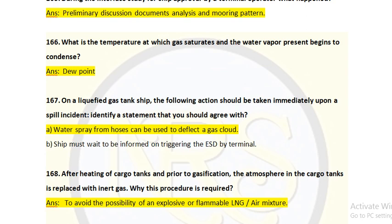If there is a spill contacting the ship structure other than the drip tray — which is made of SSR material — embrittlement and brittle fracture will occur. To overcome this, water spray and hoses are used to move the liquid away from the ship structure. Water spray from hoses can also be used to deflect a gas cloud, as LNG in negative temperature will cause higher vapor formation. So for question 167, Option A is the correct answer: water spray from hoses can be used to deflect a gas cloud.